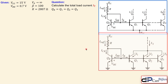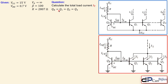In this specific circuit, QR equals Q1 equals Q2 equals Q3 — meaning they are matched. They have the exact same Early voltage, the same beta, and the same emitter area — they are copies of each other. We have one DC source of 15 volts and assume VBE is 0.7V for all four transistors. We also know the resistor value determined in example number one. What we want to calculate is the total load current IT, which is the summation of I1, I2, and I3 — the collector currents of Q1, Q2, and Q3.